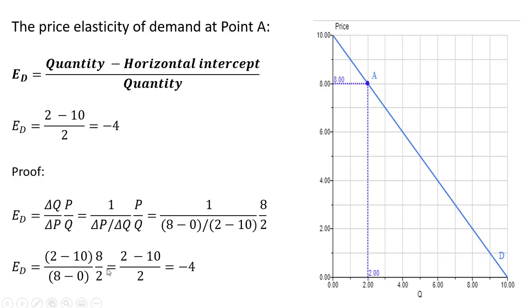Now rewriting this last step. This first part is (2 minus 10) over (8 minus 0), and the 8s cancel, leaving us with our formula on top. Let's do another example.